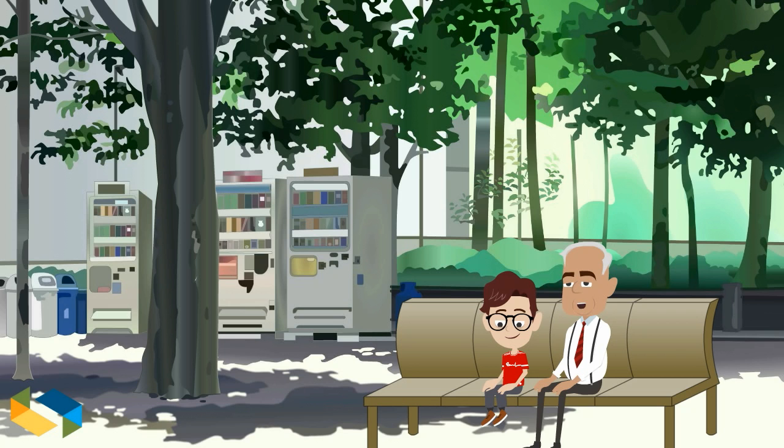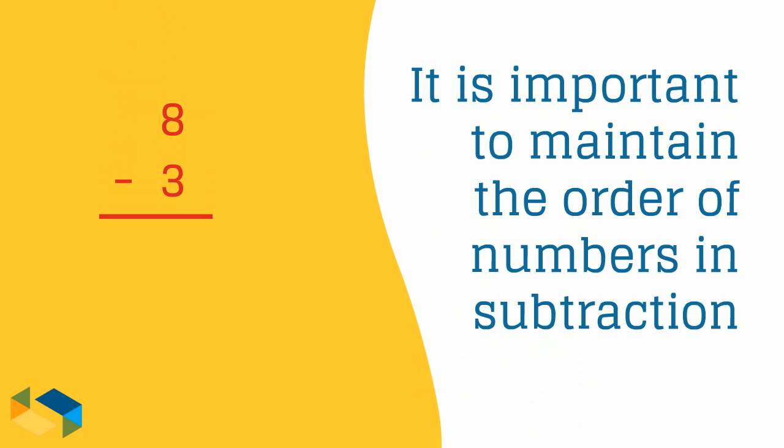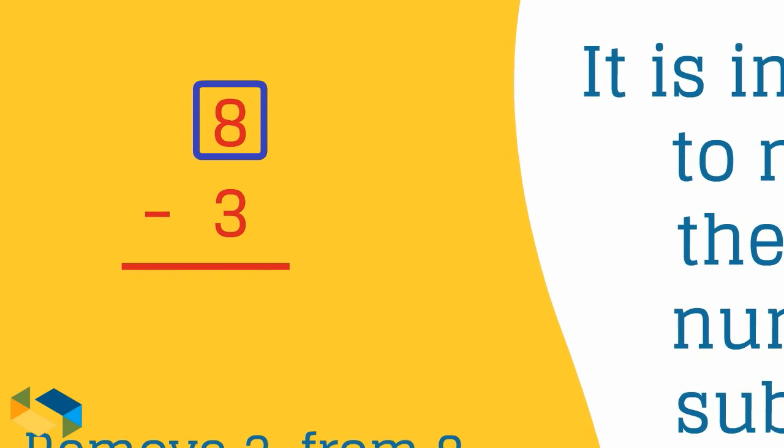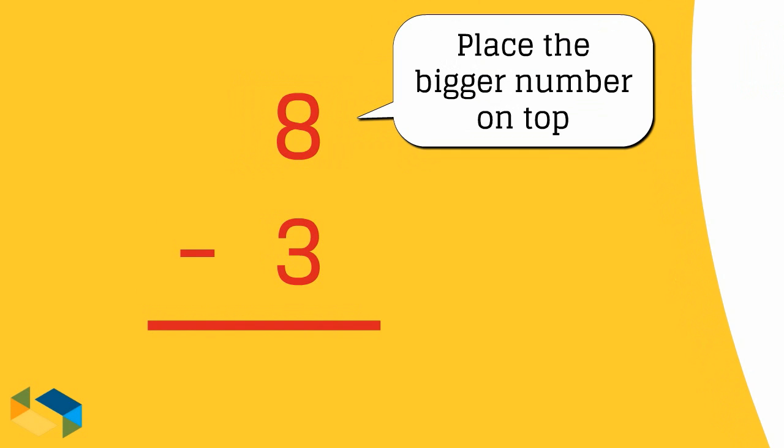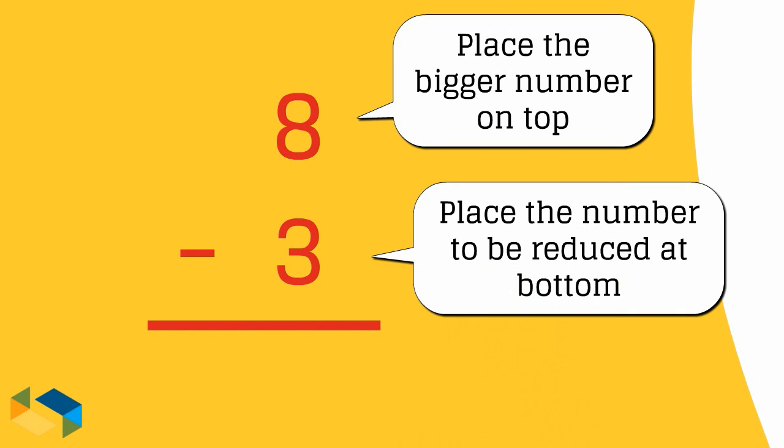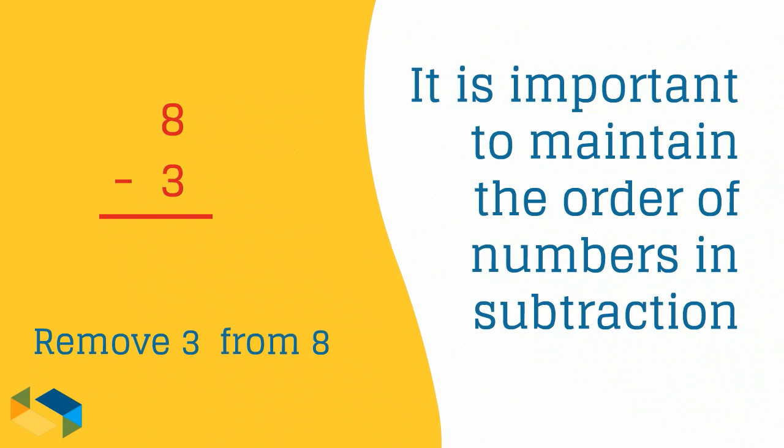You have to remember that in subtraction, the order of numbers is very important. Taking the same example, there is a certain way eight minus three is to be written. You place the bigger number at the top and the number to be reduced at the bottom. The answer, of course, is five as we saw earlier.